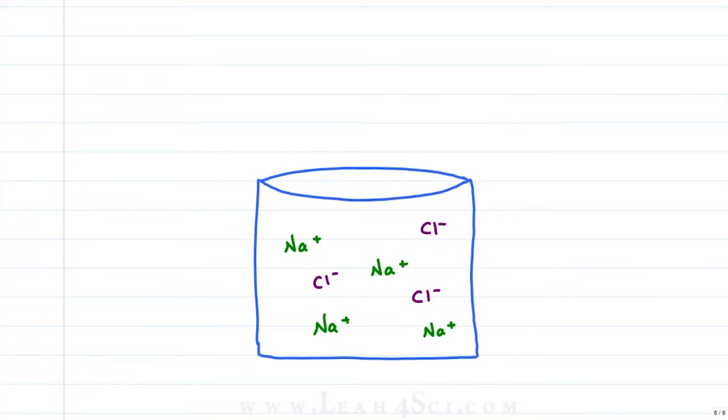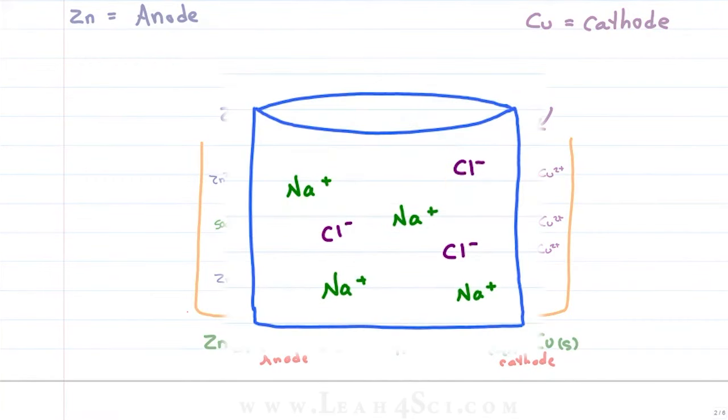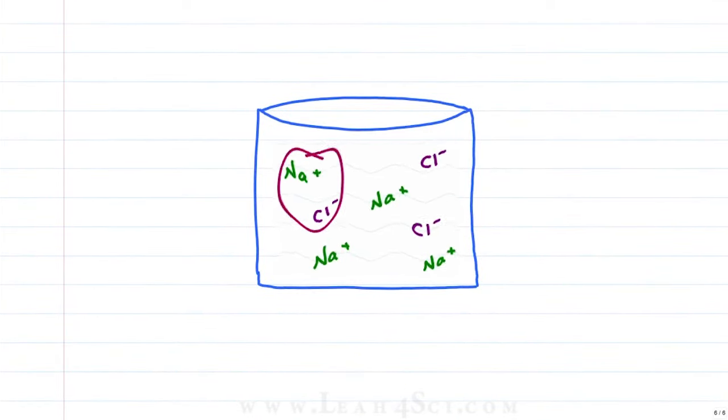Notice that unlike the galvanic or voltaic cell where we had two half cells, this reaction happens in one single container. The reason for that is in the galvanic cell, we had a spontaneous reaction where if this was all mixed together, the electrons would simply flow directly from zinc metal to copper ions without the ability to harness any electricity. Here, the sodium and chloride can be bumping right into each other and they have no desire to give up those electrons. So there's no risk of losing any energy until you start forcing this reaction to happen.